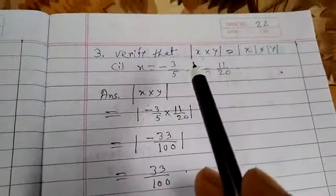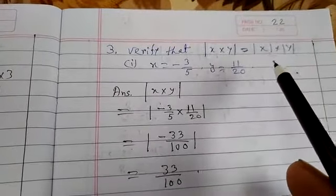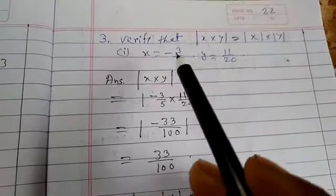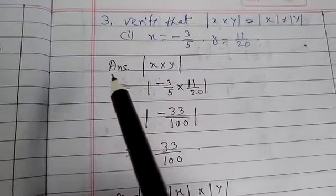Verify that |x · y| equals |x| · |y|. x equals -3/5 and y equals 11/20. Answer: